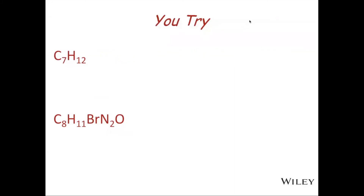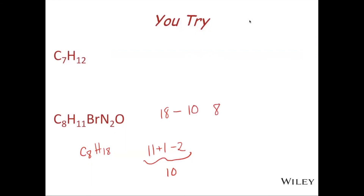For the more complicated example, C8H11BrN2O — the saturated compound would be C8H18. We take 18 and subtract from it the effective hydrogens: 11 hydrogens plus 1 halogen gives 12, then subtract 2 for the two nitrogens, and we ignore the oxygen — so the value is 11 plus 1 minus 2 which is 10. We take 18 minus 10 which gives us 8, divide by 2, and so we end up with 4 degrees of unsaturation for this compound.